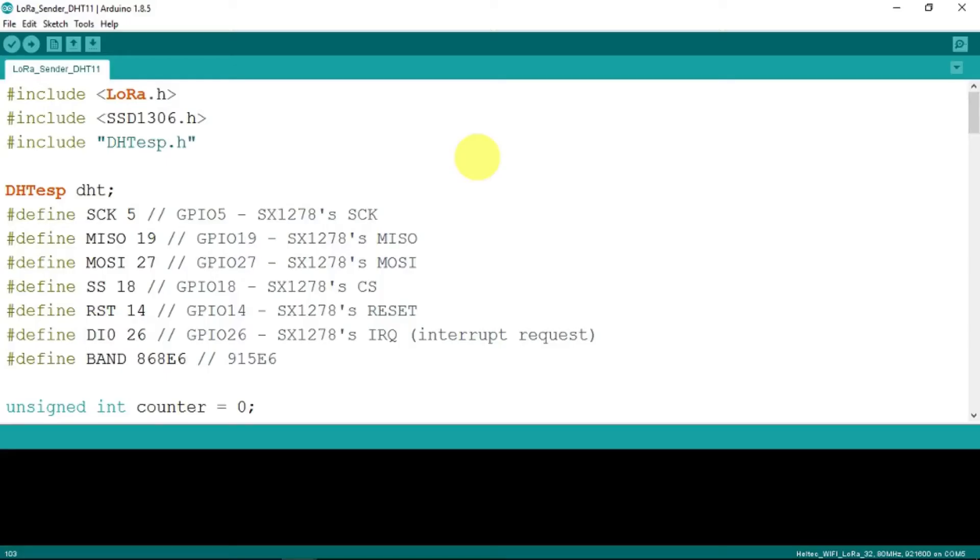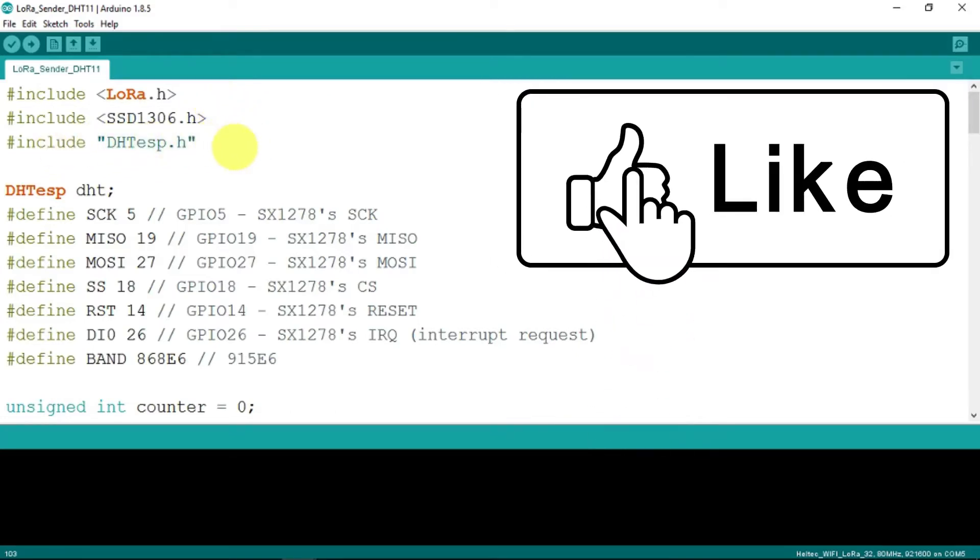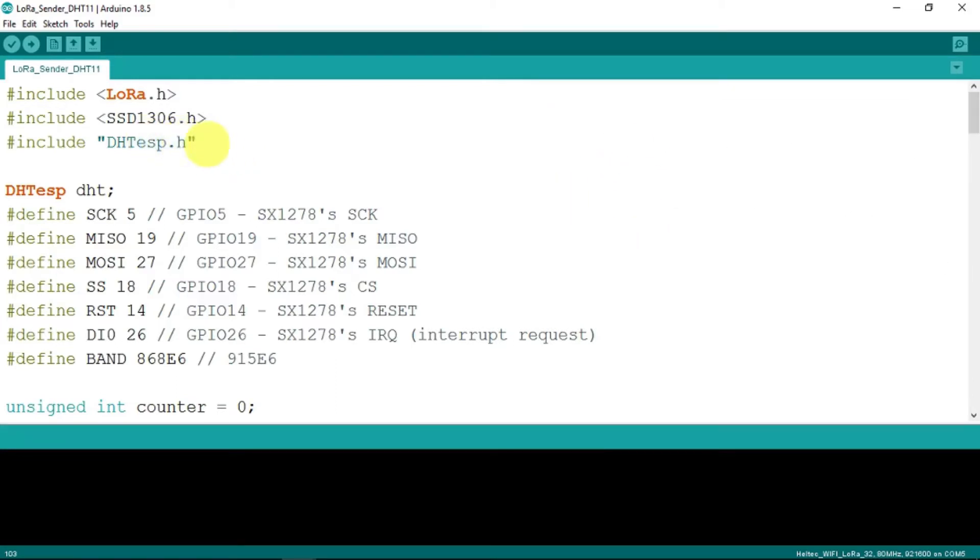Just a quick look at the code. Now the real changes are only made in the sender code. The receiver code just prints out the packets that it receives. So nothing to do there. On the sending side, we need to include the library for the sensor itself. So we have the DHT. This is a specific library for the ESP32.